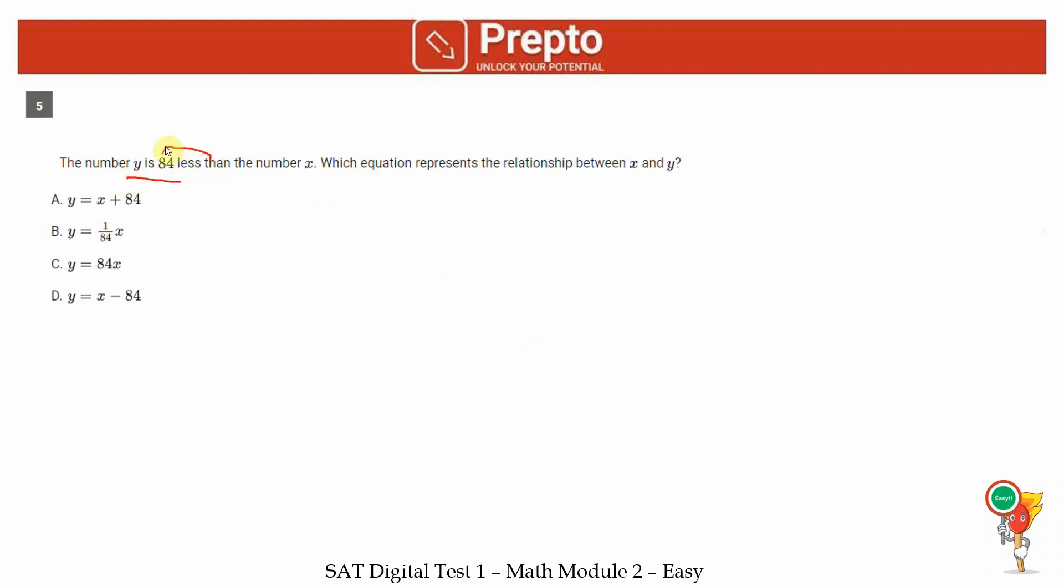The number y is 84 less than the number x. So y is not equal to x, but it is 84 less. You have to reduce 84 from x to get y. And hence, our answer is option D, y equals x minus 84. Another way you could do this is you could work with numbers. If x is 84, y is 84 less than x, so y would be 0. You can check where you get y equals 0 when x equals 84. That only happens with option D.